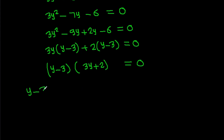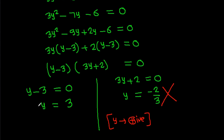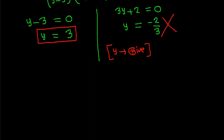Factoring gives (y - 3)(3y + 2) = 0. So either y - 3 = 0, giving y = 3, or 3y + 2 = 0, giving y = -2/3. Since we know y must be positive, y = -2/3 is not possible. Therefore y = 3.